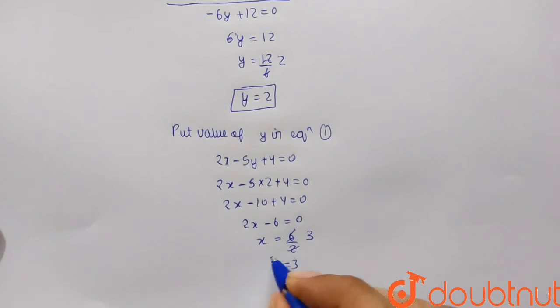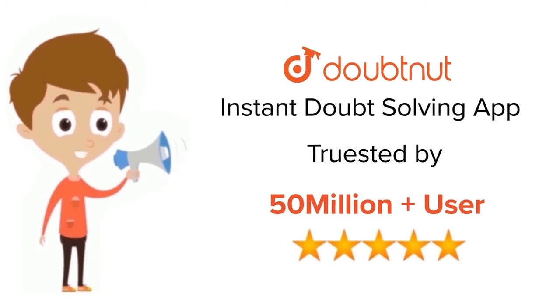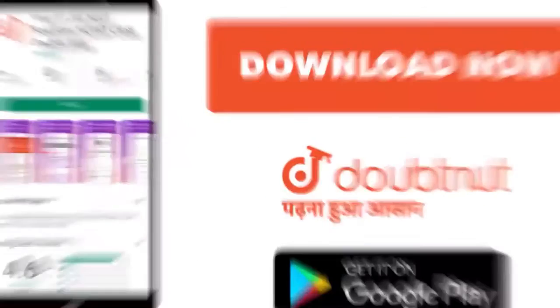So value of x is 3 and y is 2. For class 6 to 12, IIT-JEE and NEET level, trusted by more than 5 crore students. Download Doubtnet app today.